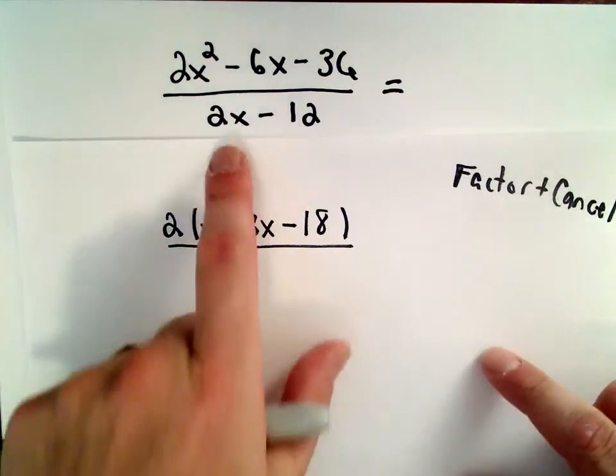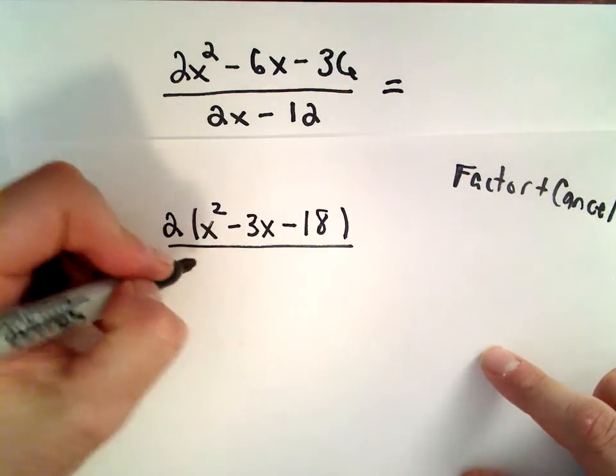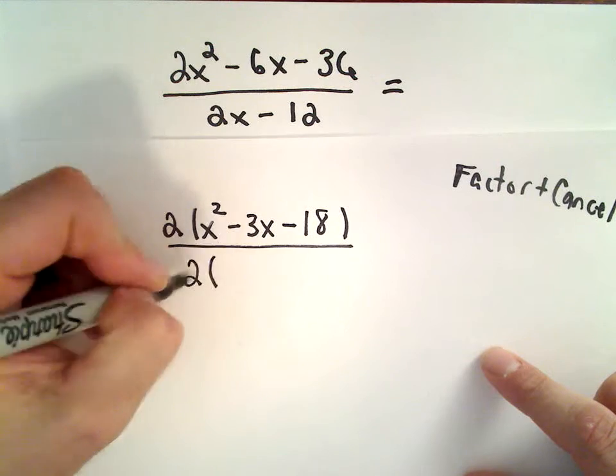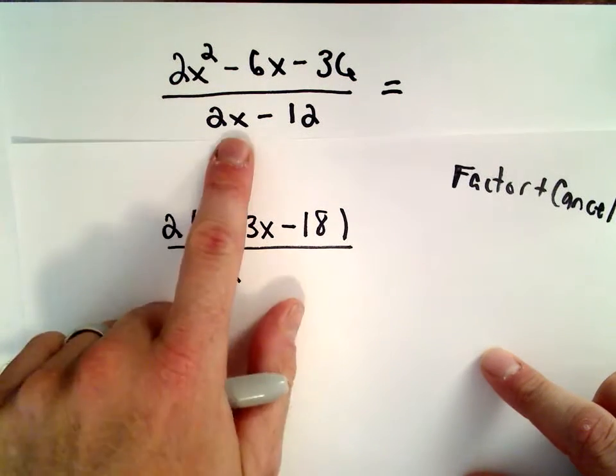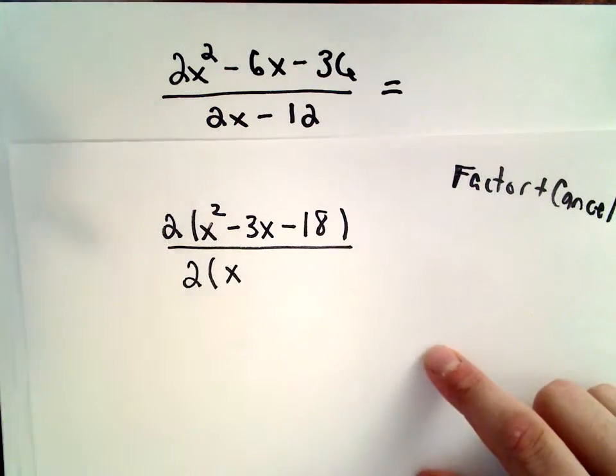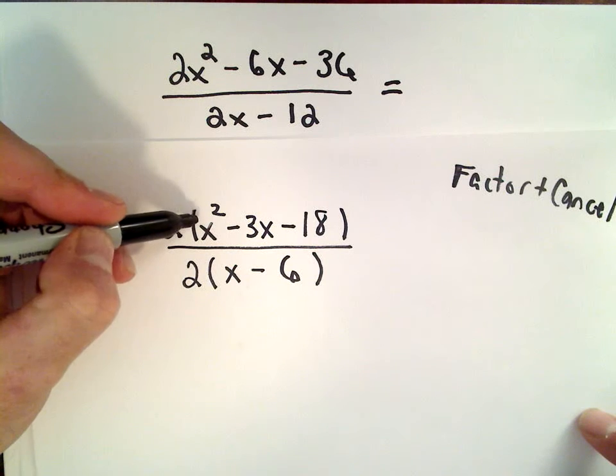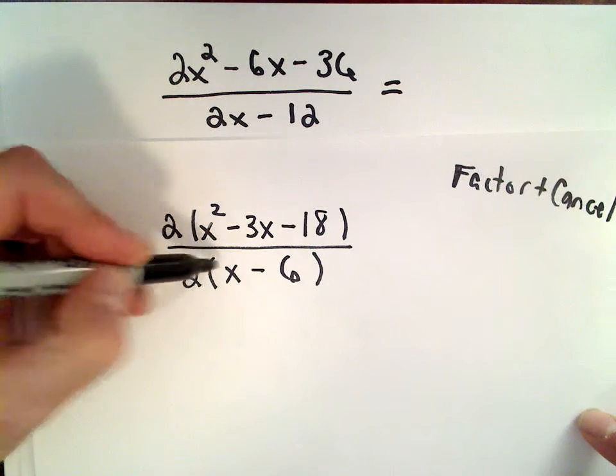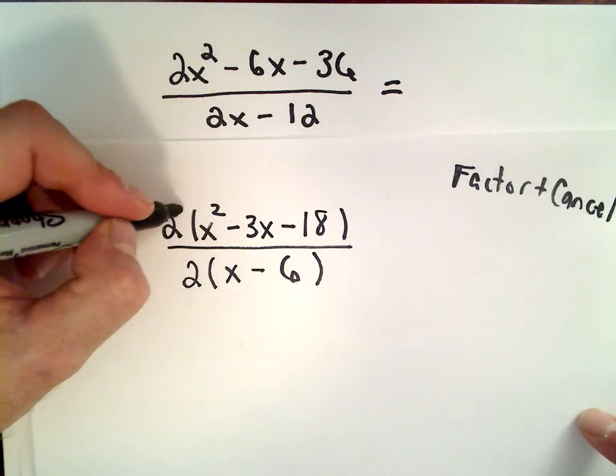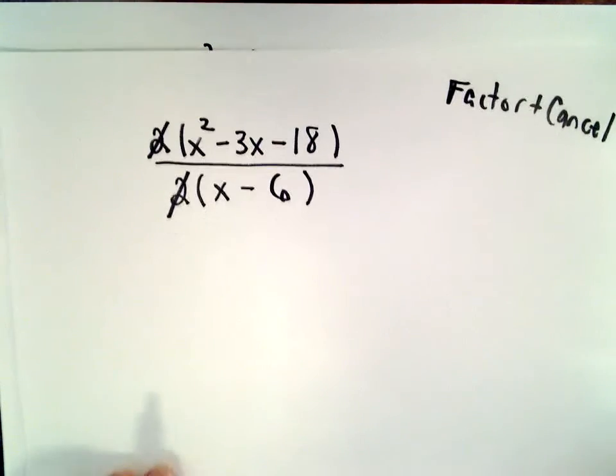We can do the same thing in the denominator. Again, both terms don't involve x, but they are both even, so again I can factor out a 2. So 2 multiplied by x would give me my 2x. 2 multiplied by negative 6 would give me negative 12. Well, I've got 2 multiplied by this expression, 2 multiplied by this expression, so the first thing I would do is I can cancel out those 2's.